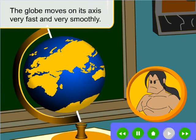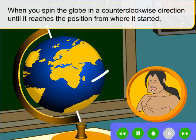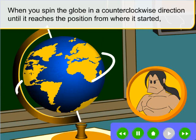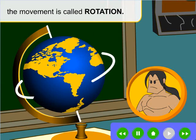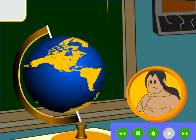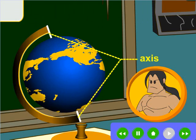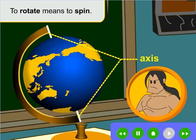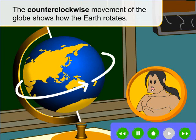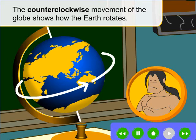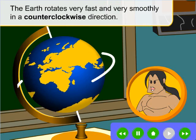The globe moves on its axis very fast and very smoothly. When you spin the globe in a counterclockwise direction until it reaches the position from where it started, the movement is called rotation. The globe rotates on its axis. To rotate means to spin. The counterclockwise movement of the globe shows how the Earth rotates. The Earth rotates very fast and very smoothly in a counterclockwise direction.